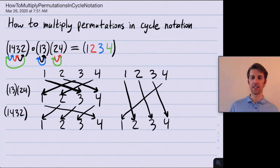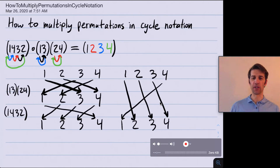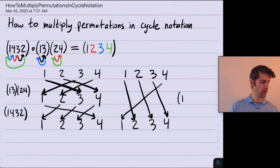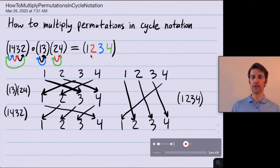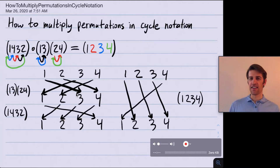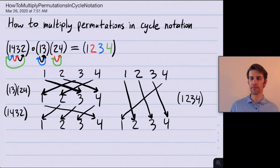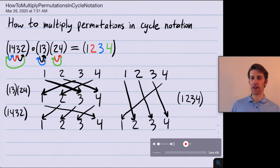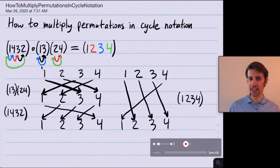Our answer agrees with what we drew out below — this is indeed the permutation (1, 2, 3, 4) with 4 going back to 1. The advantage of doing things algebraically is that I don't need to draw the pictures to get the right answer. Drawing colored arrows can help at first, but eventually you won't need them. Note that each transition on the left-hand side gets traversed exactly once if you've multiplied correctly.